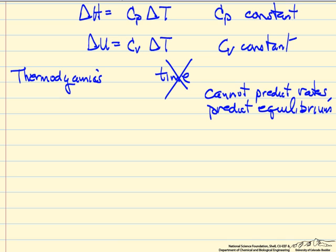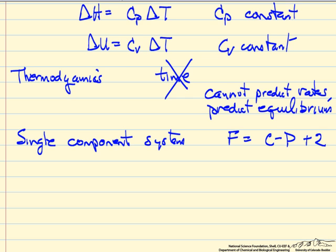Another thing that shows up as we work with a single component system is the phase rule. So the phase rule says the number of degrees of freedom we have for a system is the number of components minus the number of phases plus two. So if I'm looking at a single component system, one minus number of phases plus two equals three minus the number of phases.